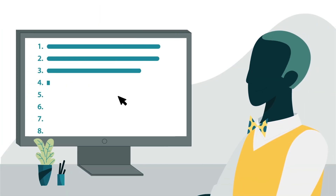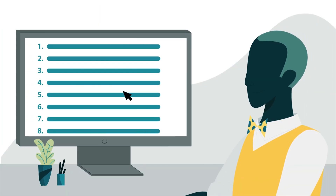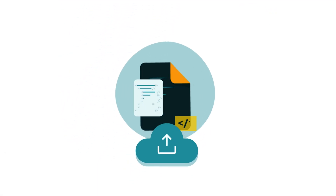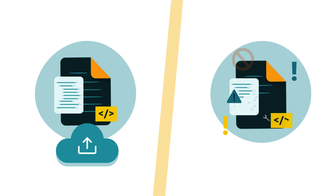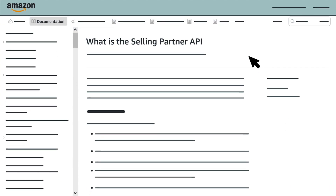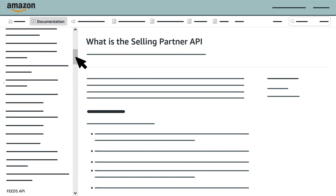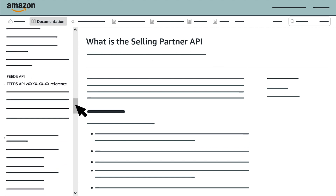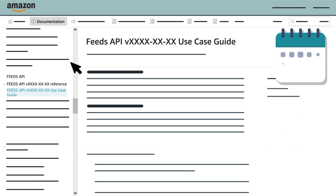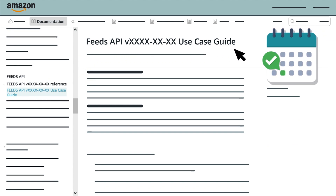After reviewing step-by-step instructions for submitting a feed, we troubleshoot common issues. You can find written instructions for submitting and troubleshooting a feed by visiting the SP API documentation website. Scroll down the Table of Contents to the Feeds API header, then select the reference page with the most recent date in the past and click the Use Case Guide with the same date. Any earlier versions are outdated, and versions dated in the future haven't been released yet.